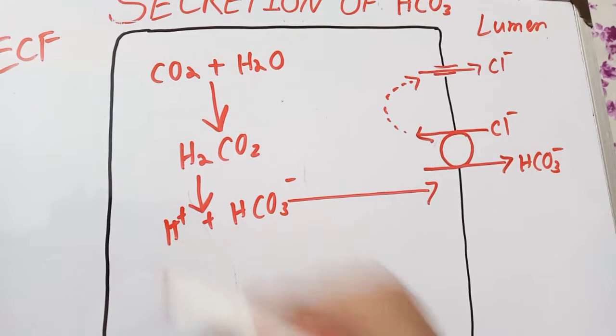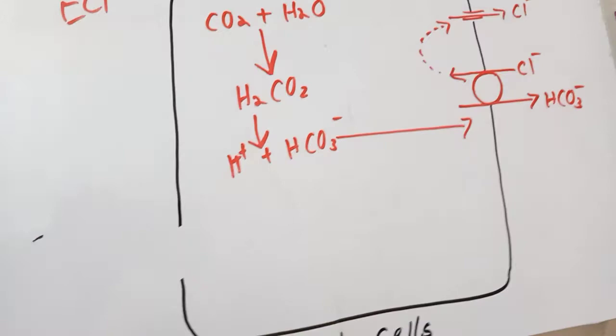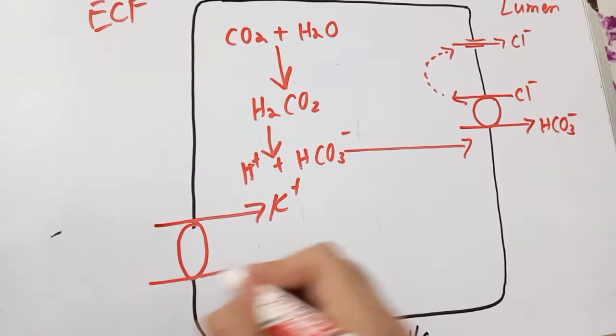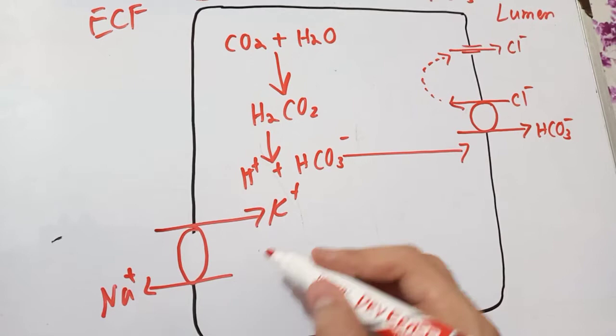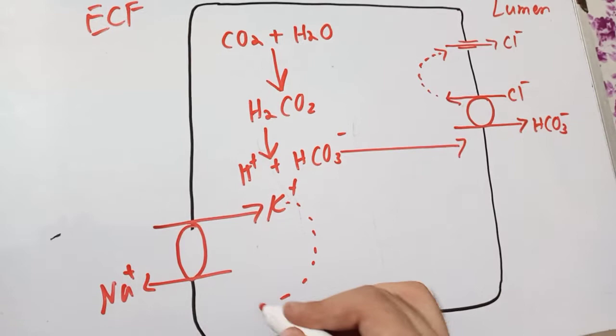Before we talk about the hydrogen ion, we need to talk about our friend sodium-potassium ATPase. It pumps potassium into the cell and sodium out of the cell. Now let's talk about the potassium. This potassium finds a route and starts leaking out of the cell, so we are done with the potassium.